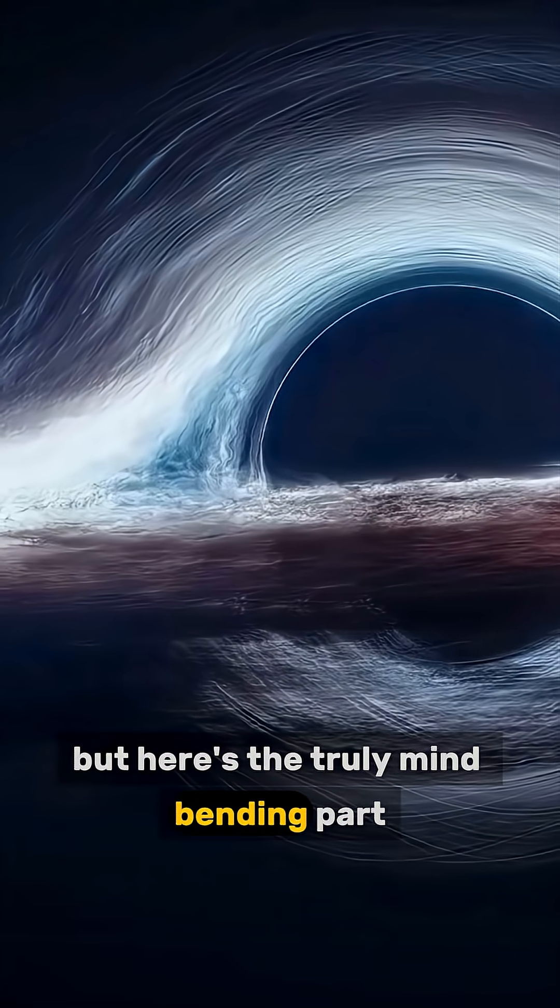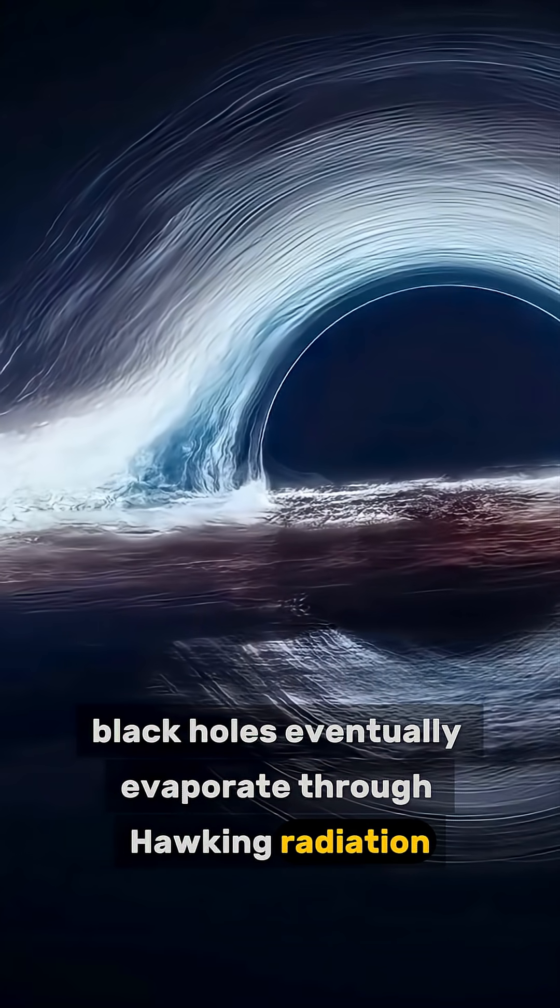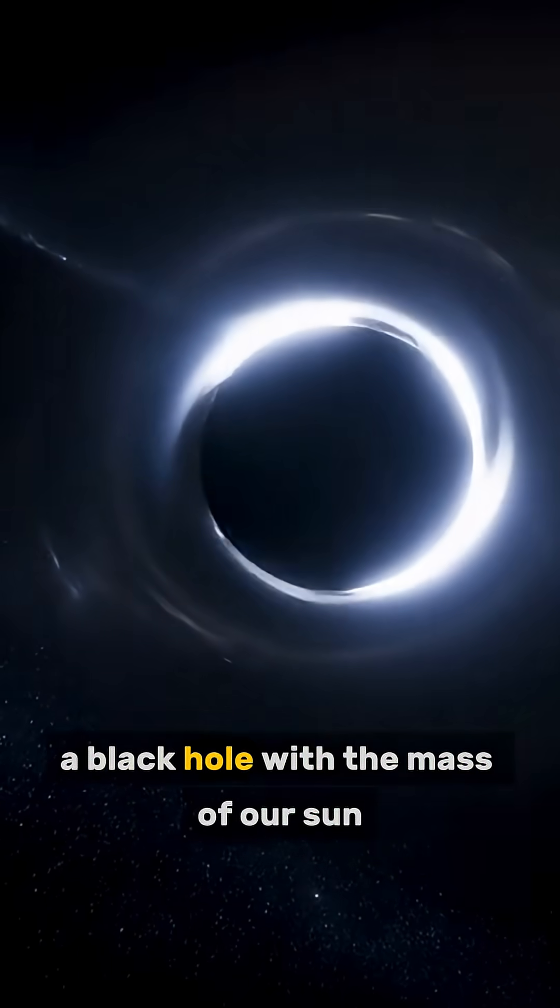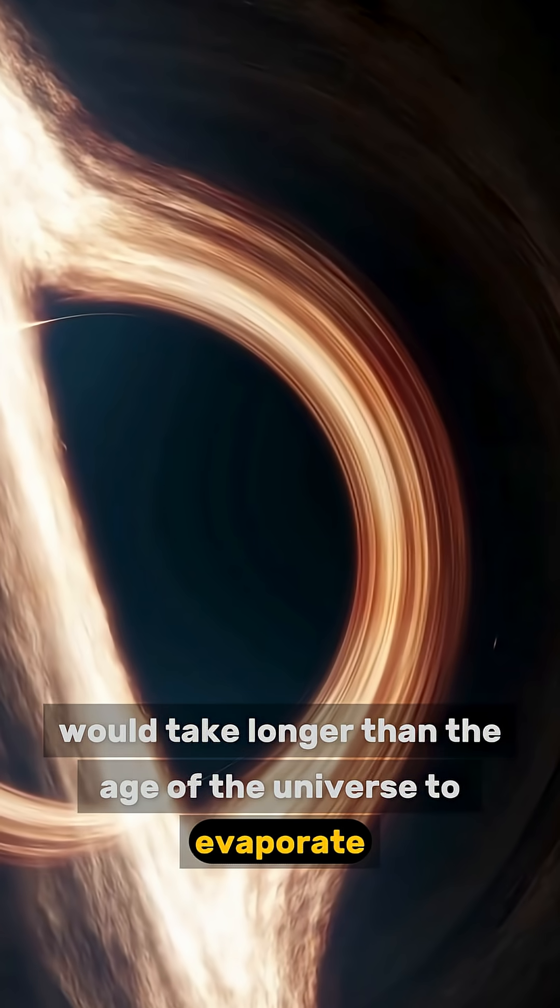But here's the truly mind-bending part. Black holes eventually evaporate through Hawking radiation, and the smaller they are, the faster they disappear. A black hole with the mass of our sun would take longer than the age of the universe to evaporate.